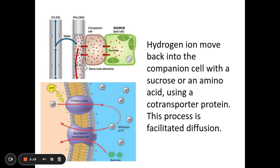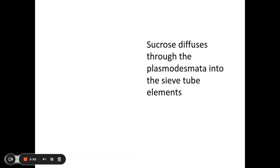Then what happens is the hydrogen ions will move back into the companion cells, but they will use a co-transporter protein and they will bring with it either sucrose or an amino acid, not both together, just one. And this process is facilitated diffusion because it's going from a high to a low concentration gradient and it's using a protein.